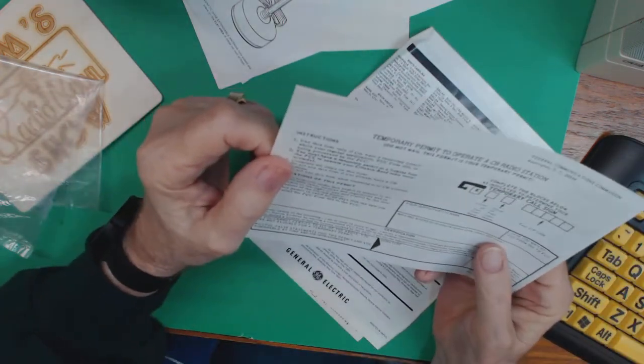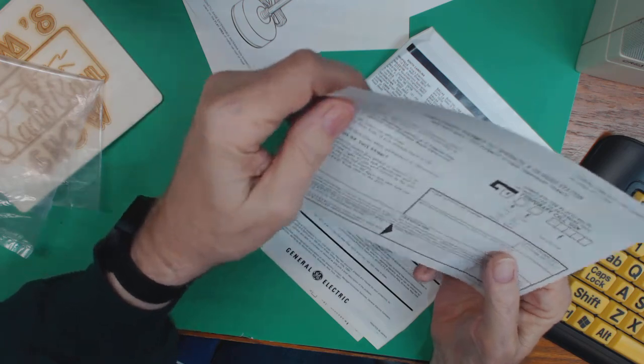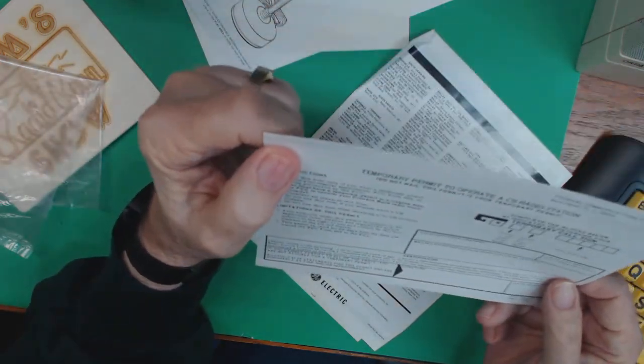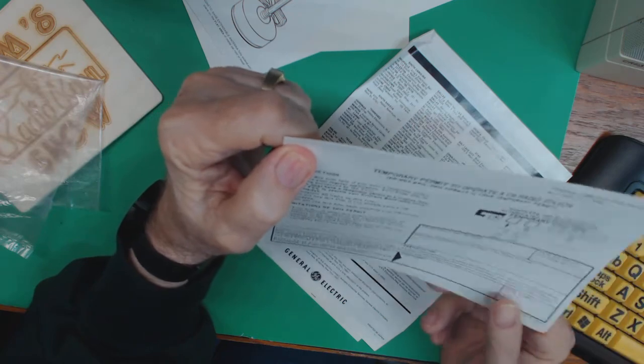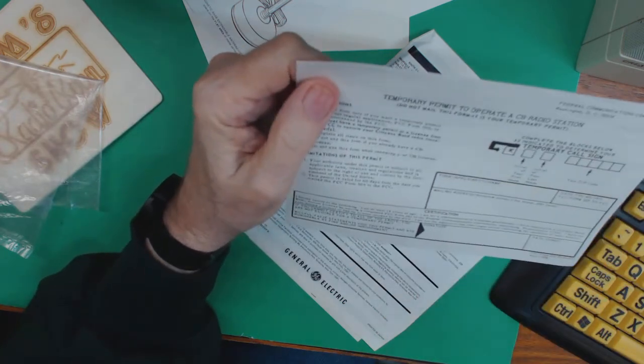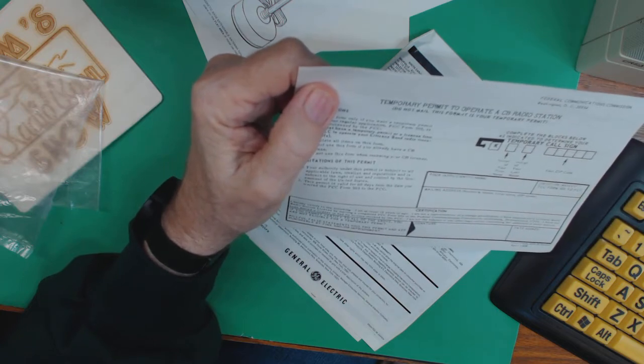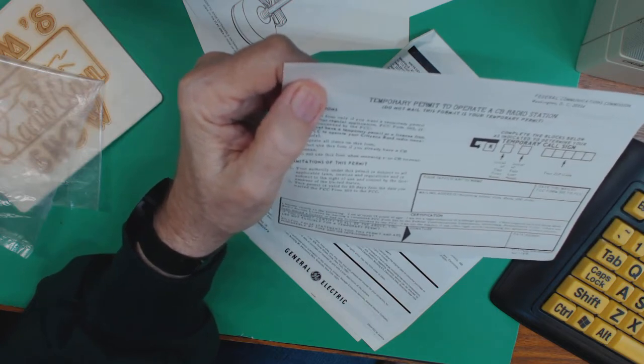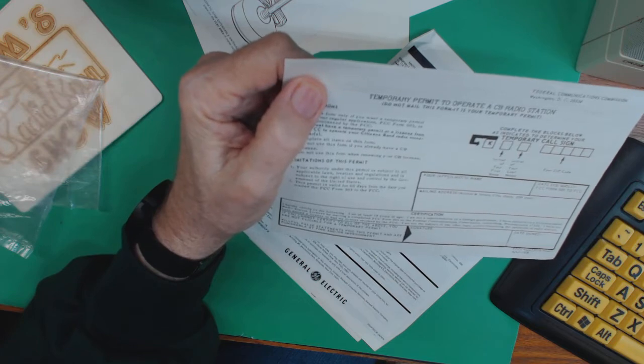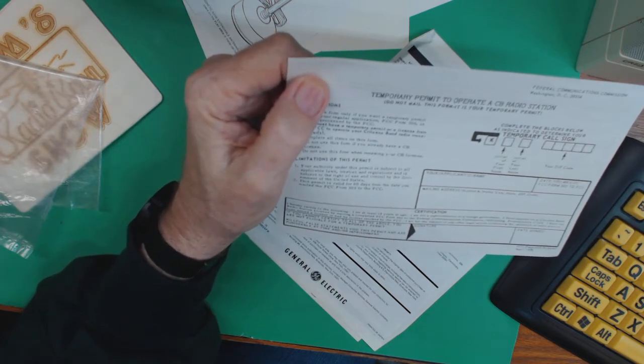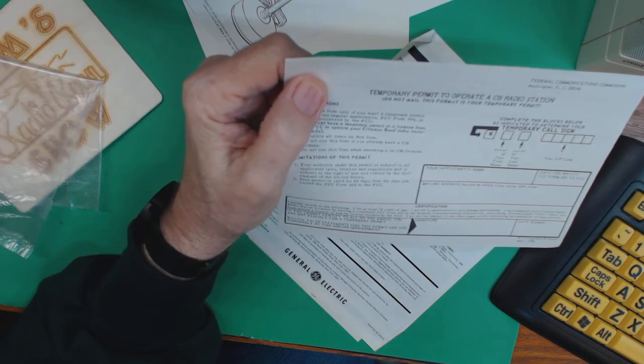Here we have, oh, this is the application itself for the license. I can't remember my call sign for CB radio, but I remember my handle. It was Midnight Monitor, because the only time I got a chance to get on the CB is after work and usually late at night.